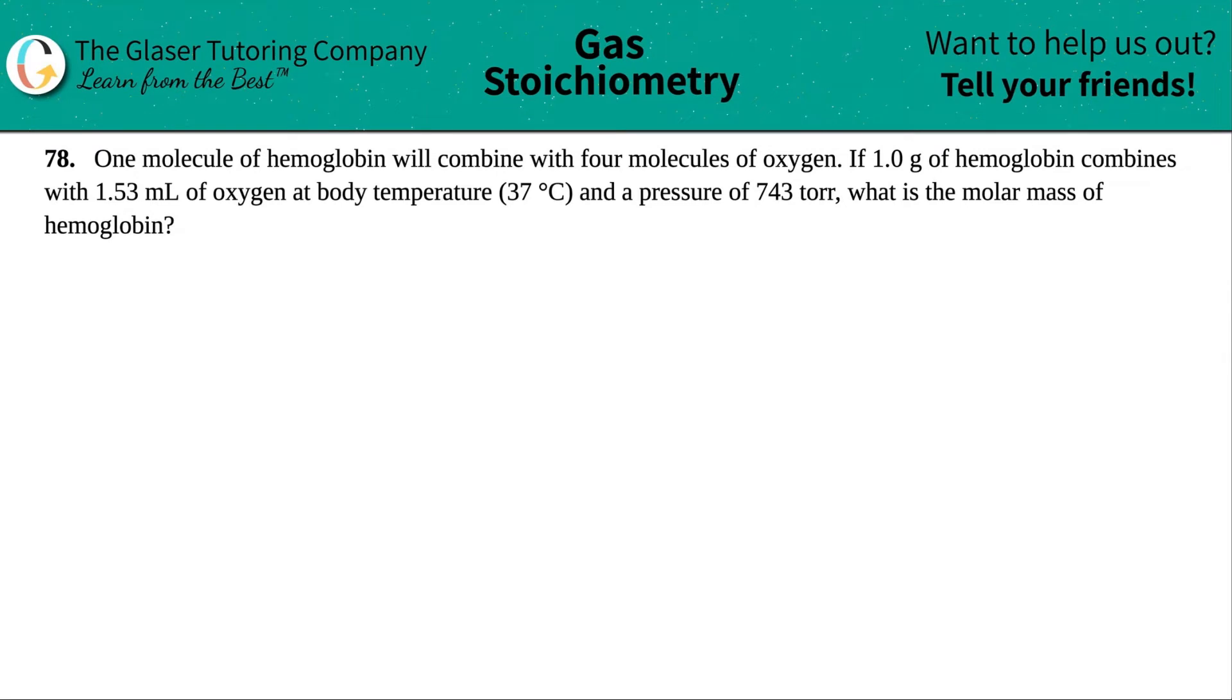Number 78. One molecule of hemoglobin will combine with four molecules of oxygen. If 1.0 grams of hemoglobin combines with 1.53 milliliters of oxygen at body temperature, which is 37 degrees Celsius and a pressure of 743 torr, what is the molar mass of hemoglobin?